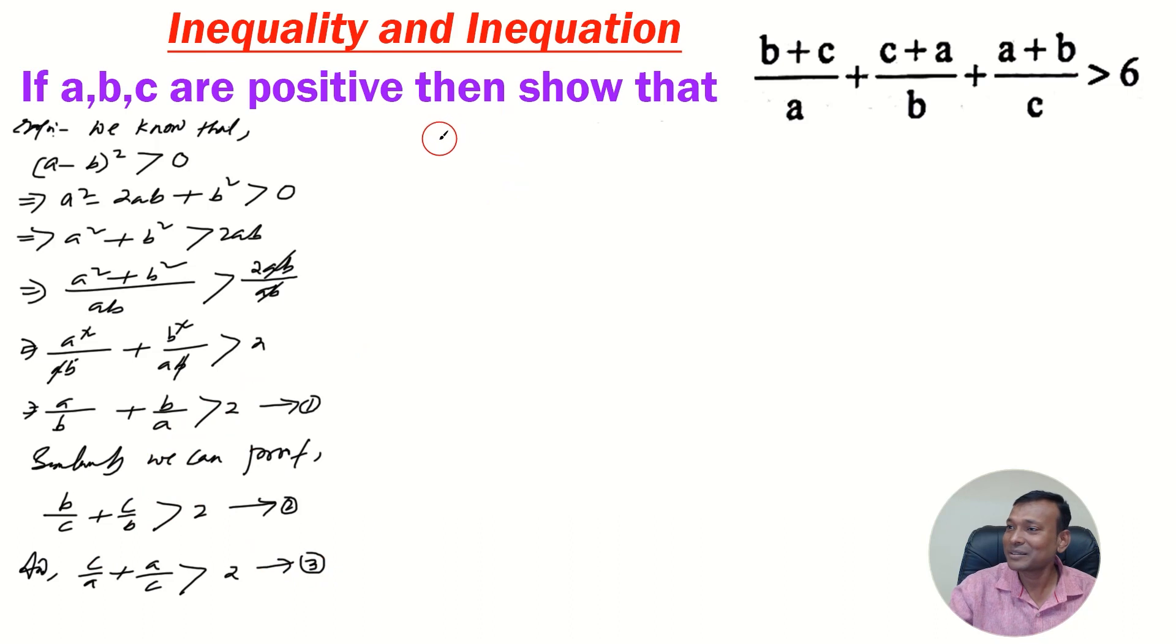Let us add all these 3. Adding 1, 2 and 3. At first, I am adding all the left hand side of equations 1, 2 and 3. a by b plus b by a plus b by c plus c by b, then c by a plus a by c. On the right side, 2 plus 2 plus 2 is 6.